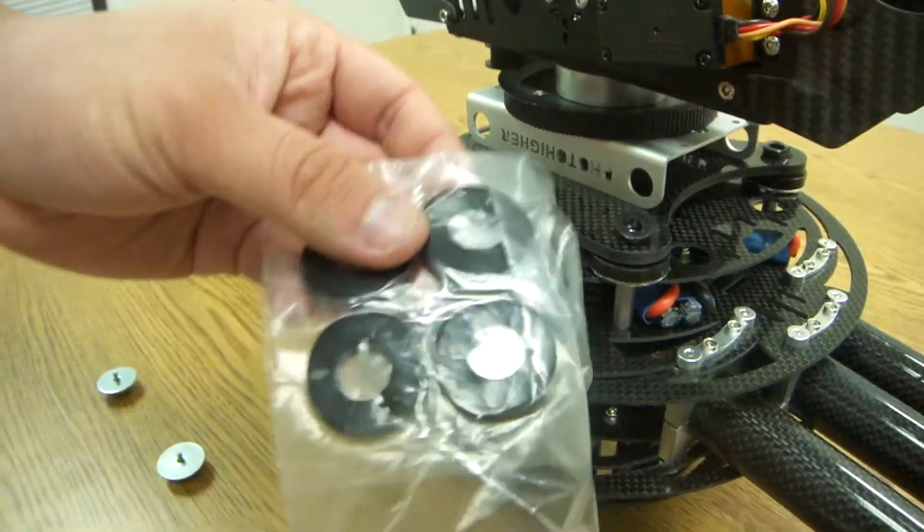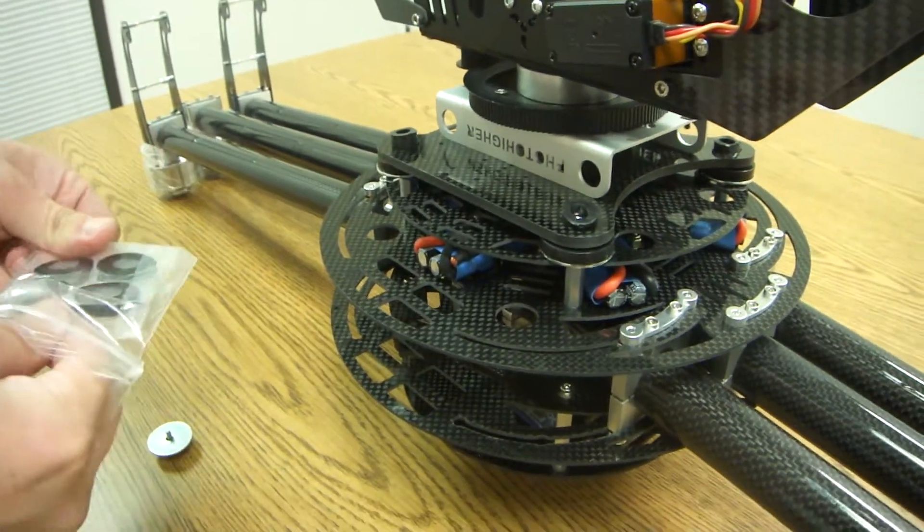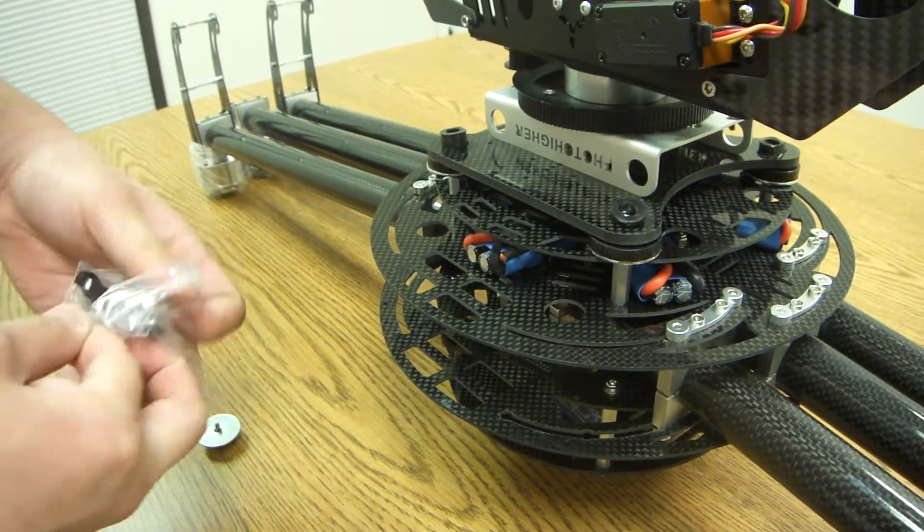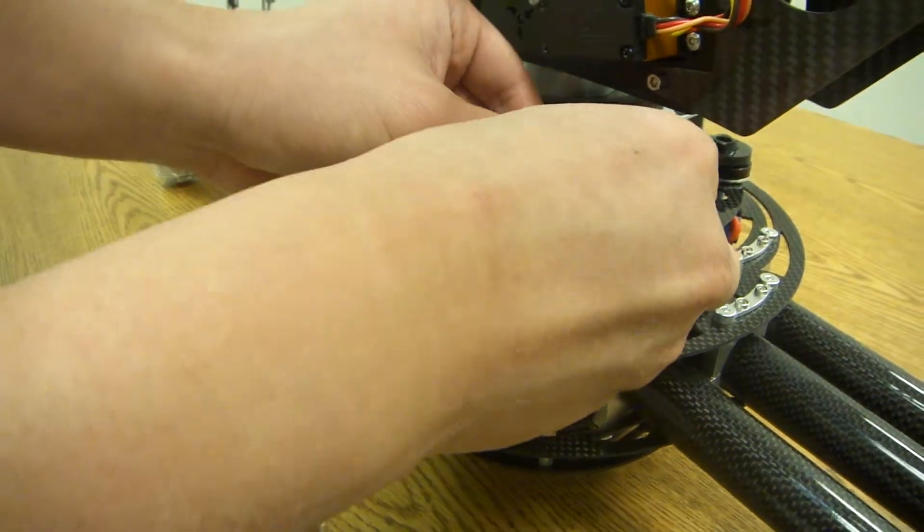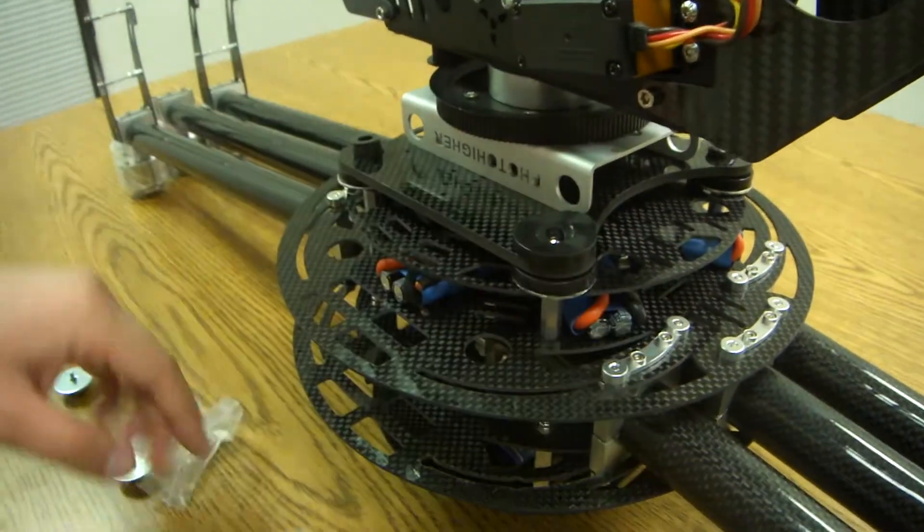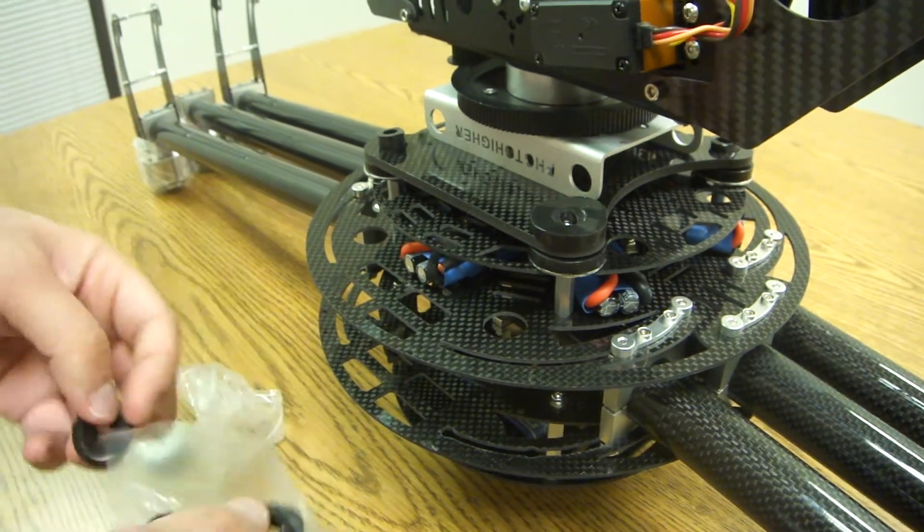So once we're done with that, we'll grab our isolated washers and what we're going to do is we're going to put the rings around the isolated bushing that is sticking out. So as you can see, I'll kind of wrap it around here and repeat the process for all of them.